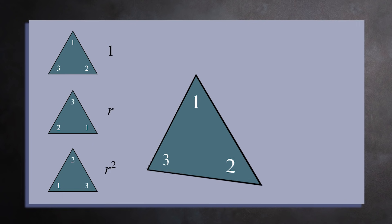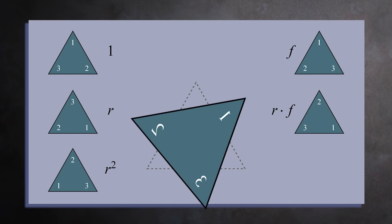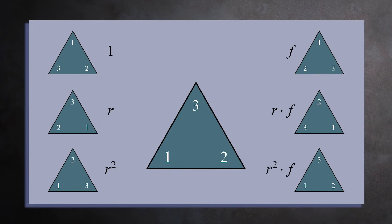Next, if you pick up the triangle and flip it about the vertical axis, you get one, three, two. We'll call a flip about the axis f for flip. If you flip it twice, you return to the starting position, so f squared equals one. You could also flip then rotate, which gives two, one, three. And finally, you can flip then perform two rotations, which gives three, two, one.